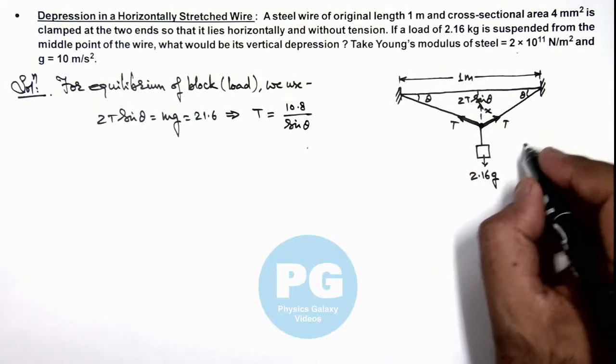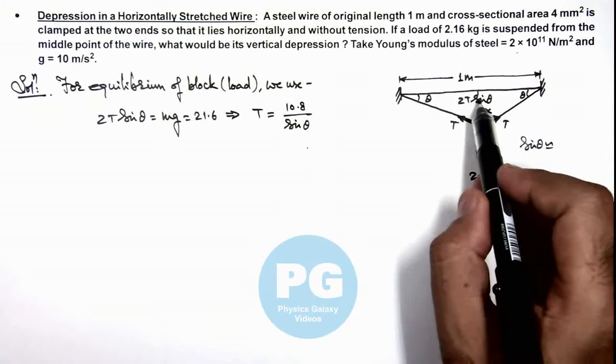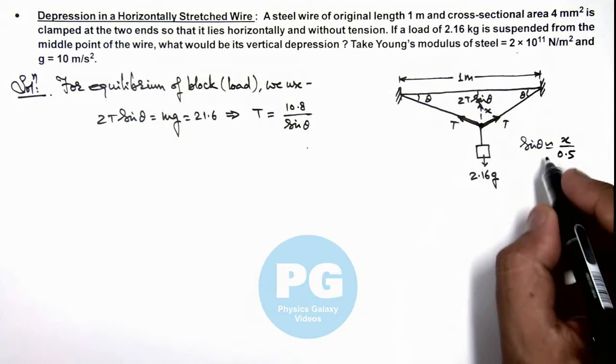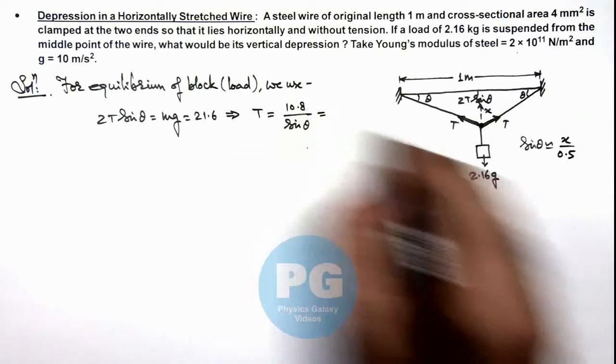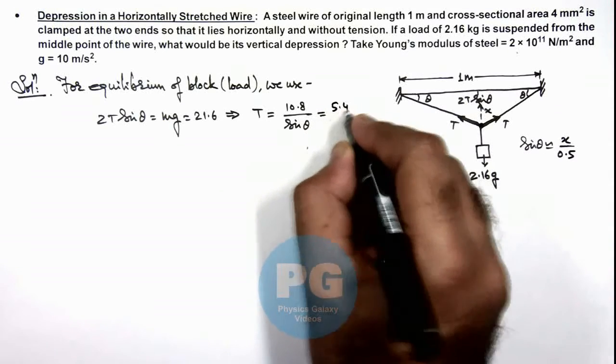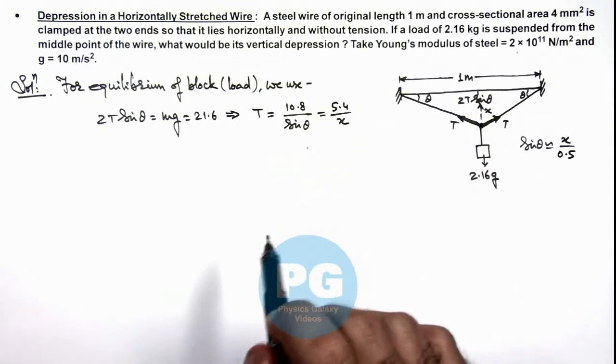And here the value of sin theta we can approximately write as tan theta, which is x divided by 0.5. So we substitute the value of sin theta here. This 10.8 multiplied by 0.5 is 5.4 divided by x. This is the value of tension in the string we are getting.